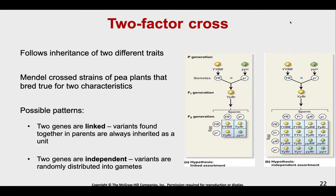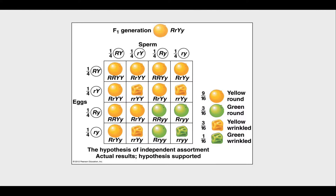Right now we're going to focus on genes that are independent. They can be independent, meaning variants are randomly distributed into gametes — their distribution does not rely on another gene. So Mendel did a two-factor cross. If we're looking at a two-factor cross, we can also draw out a Punnett square. It's going to be a little more complex, but we find all the possible combinations that the sperm can have and every possible combination that the eggs can have.